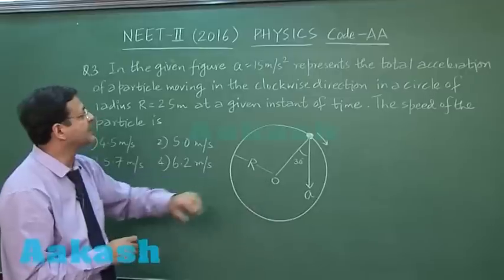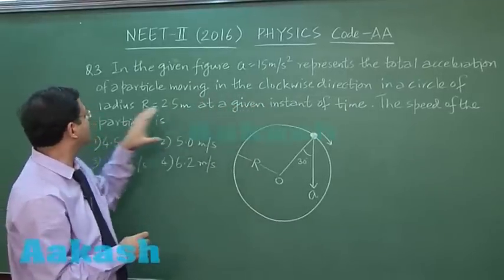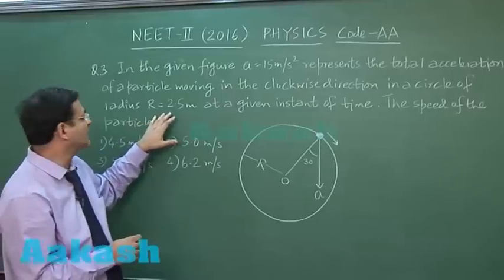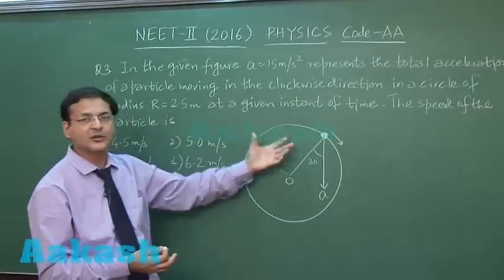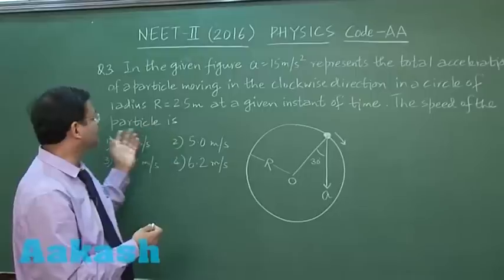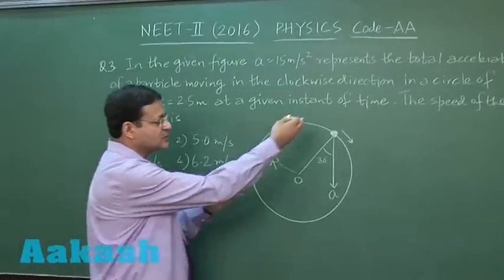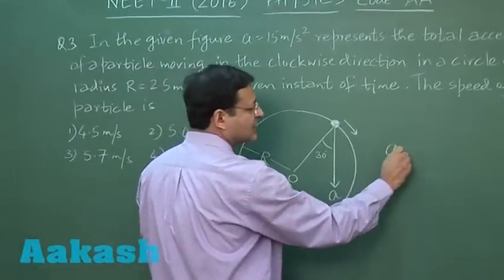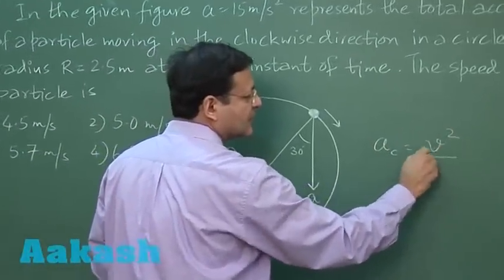So the clockwise direction in a circle of radius r - radius r has been given 2.5 meter at a given instant of time, as it is represented here. So now you have to find out the speed of the particle. Very simple. You try to see what is the centripetal acceleration. We know that centripetal acceleration is nothing but v square by r.